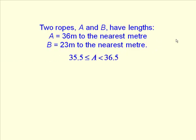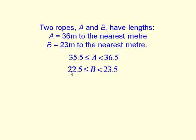Rope A is in between 35.5 and 36.5 — this lower value being its lower bound, the upper value being its upper bound. What about B? It's in between 22.5 and 23.5 — lower bound and upper bound again.